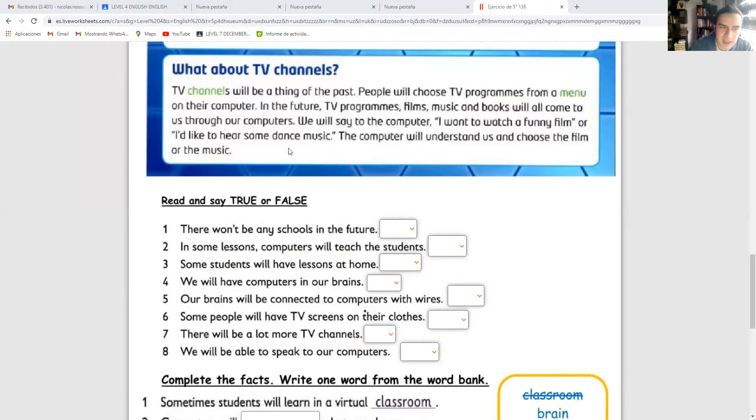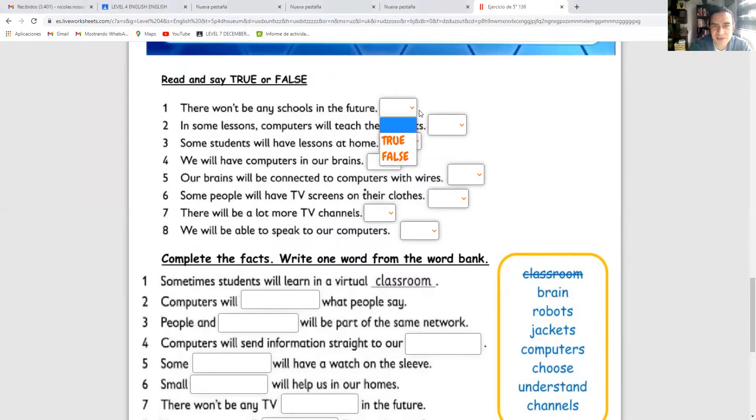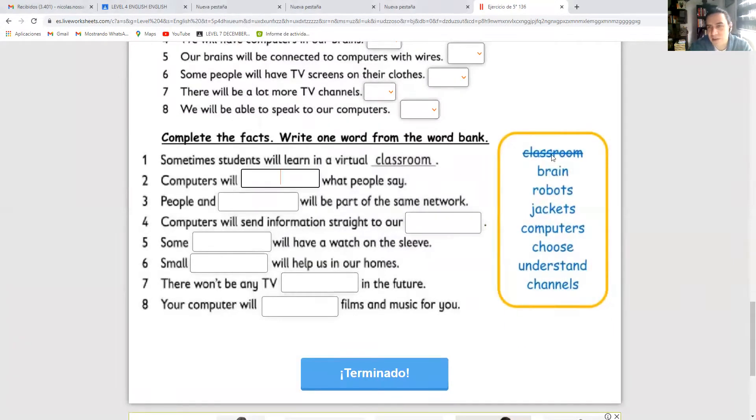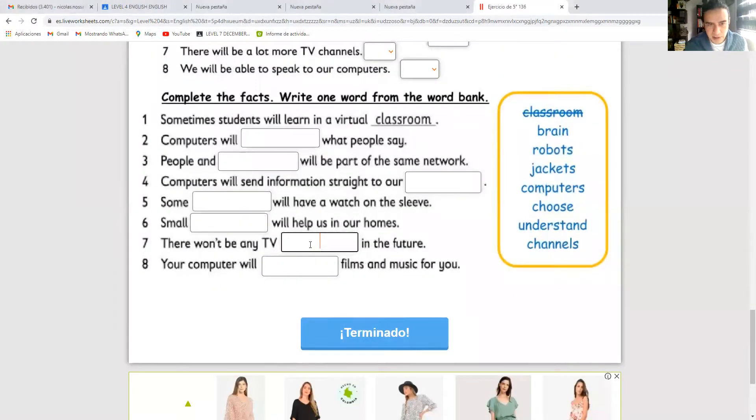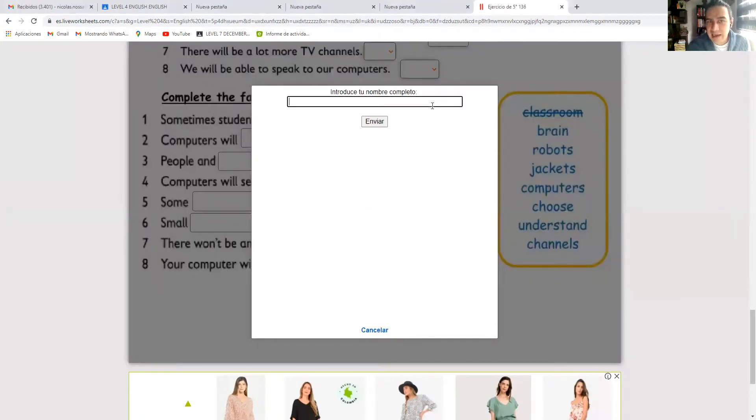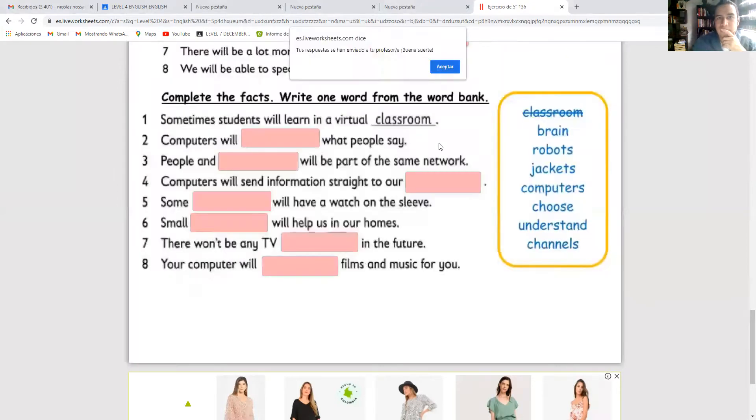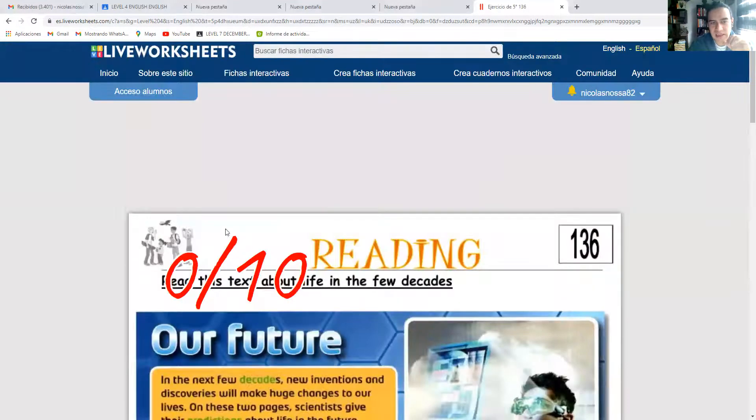Once we do the reading, select here true or false for these sentences. Complete these sentences with the vocabulary and give it here, terminado. You write your name, send it, and your grade will appear. Then we will review it in class.